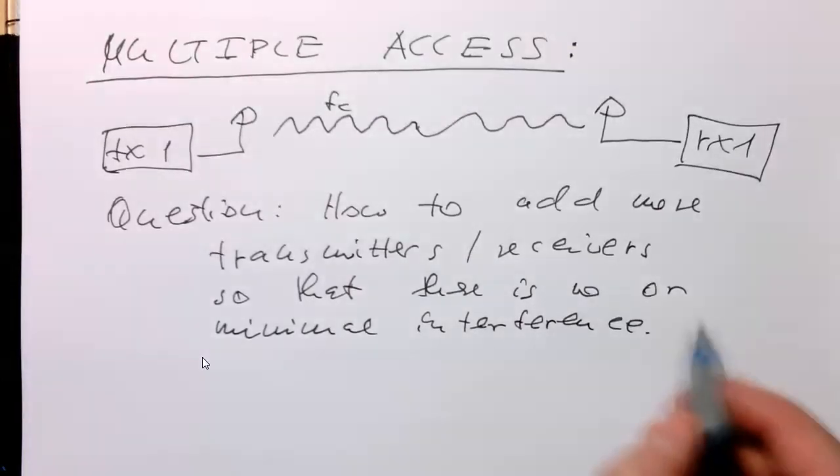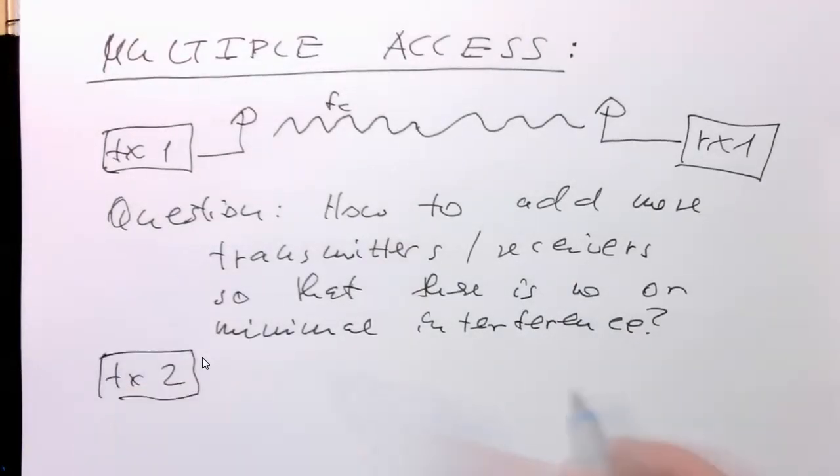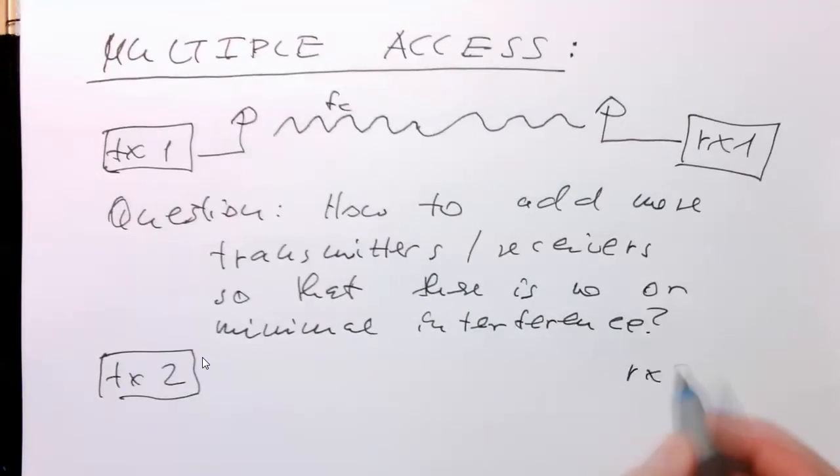So how do we do that? If we have, for example, here another transmitter TX2, and here we've got a receiver RX2.